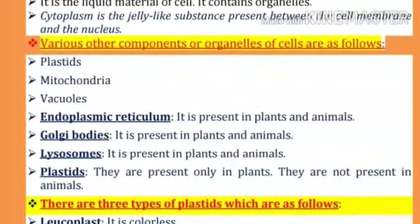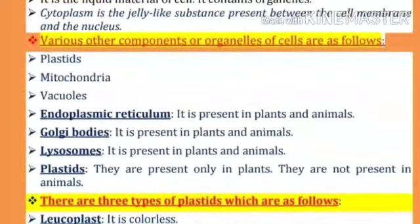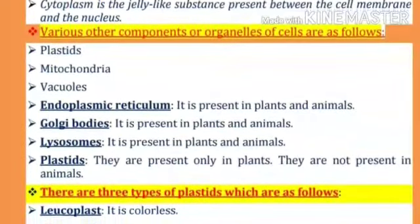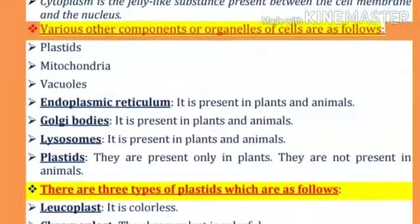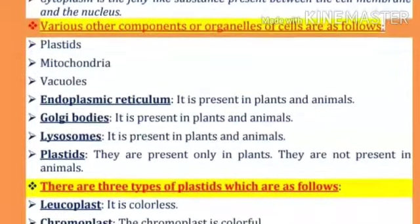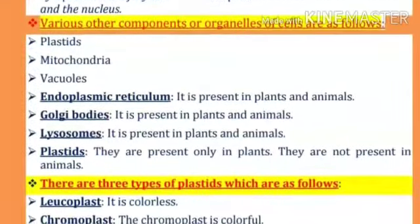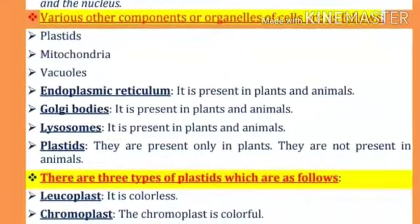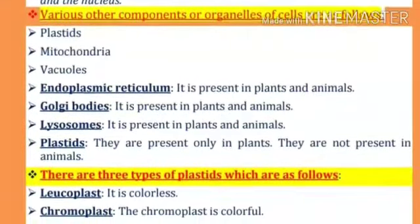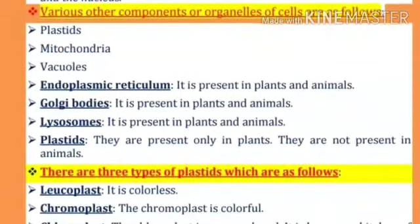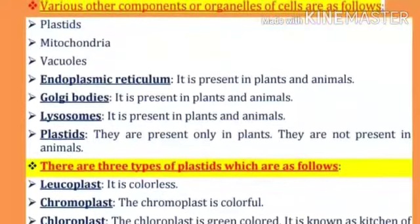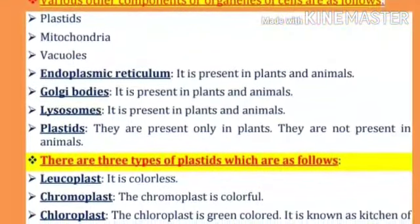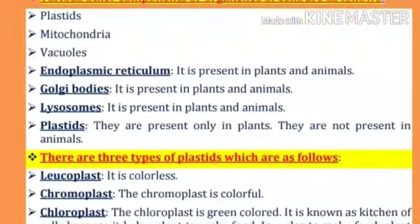The organelles include plastids, mitochondria, vacuoles, endoplasmic reticulum — present in plants and animals — Golgi bodies, present in plants and animals, lysosomes, present in plants and animals, and plastids, which are present only in plants and not present in animals.